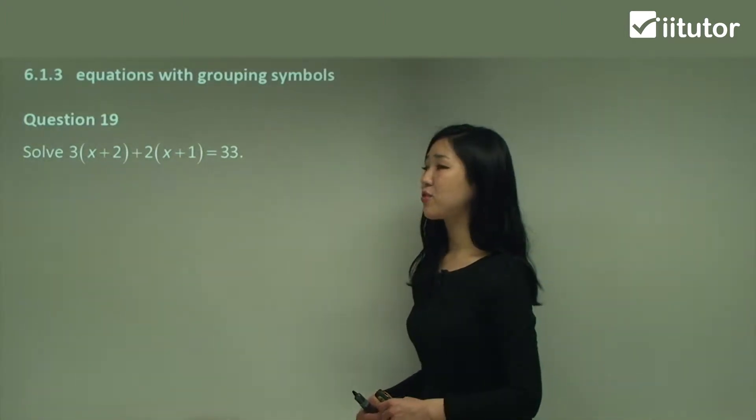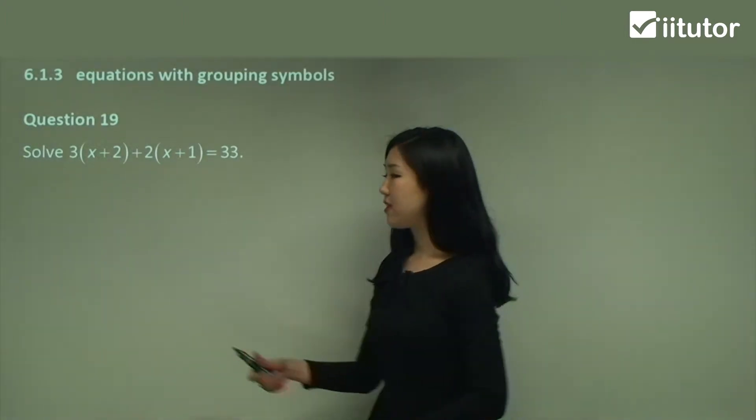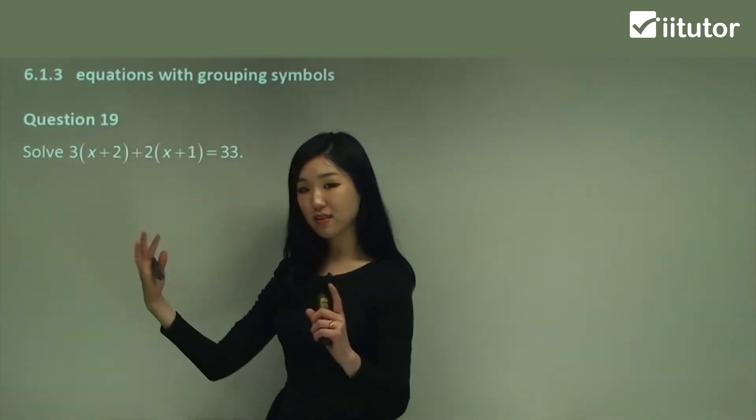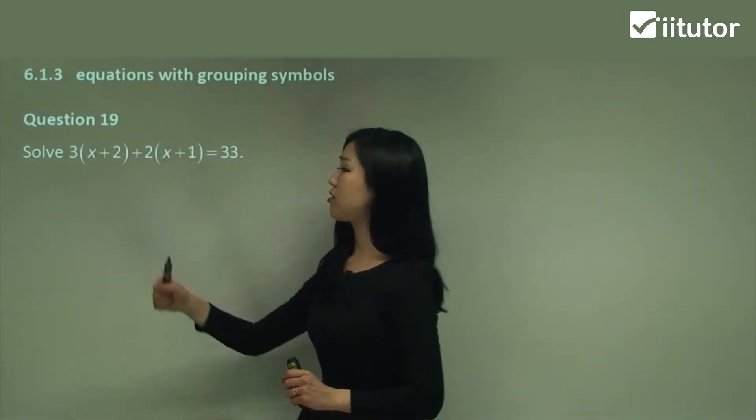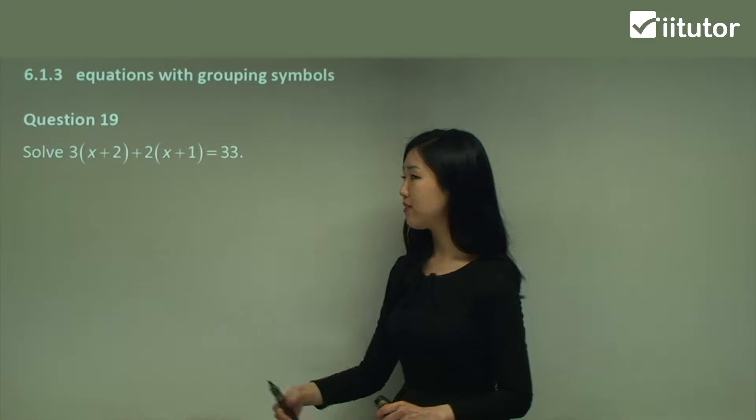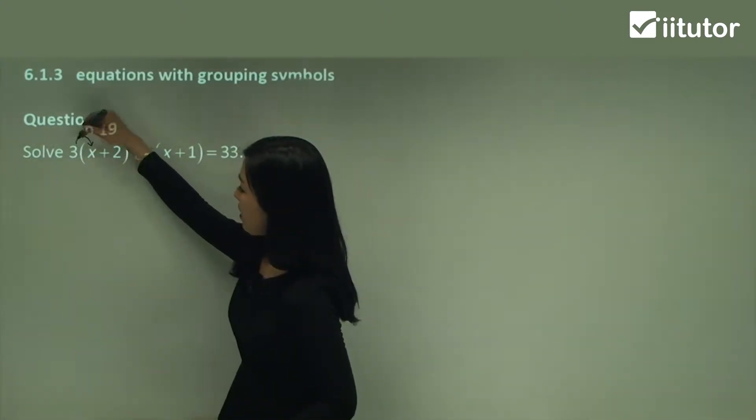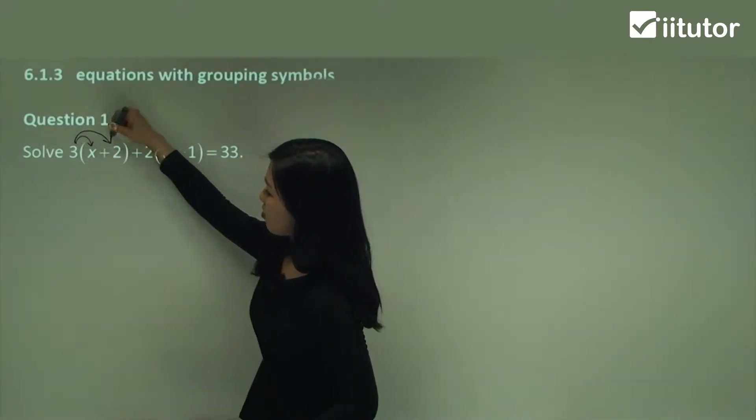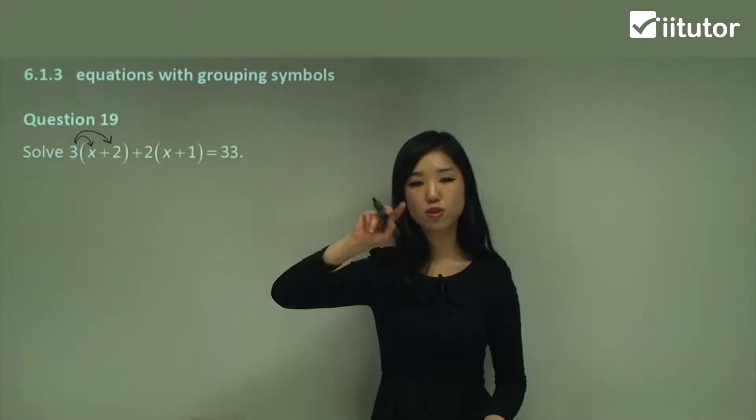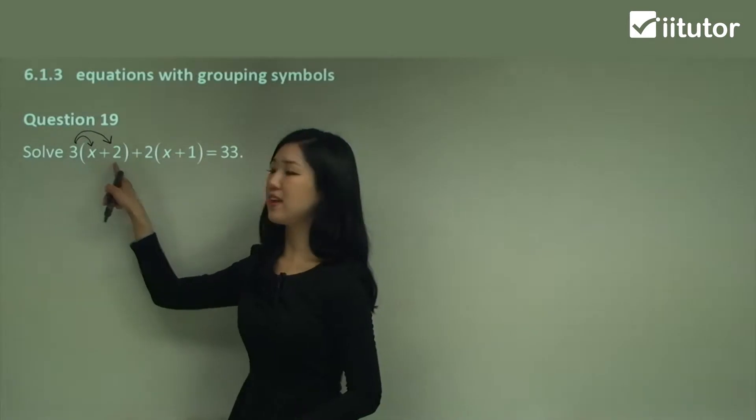Start by thinking about how to get rid of those brackets. To get rid of the brackets we need to simply expand. See how this is 3 times x plus 2 and that's 2 times x plus 1. So let's expand it. Make sure you know how to do your expansion. It's 3 times x and 3 times 2. You're going to multiply whatever's outside to everything inside.